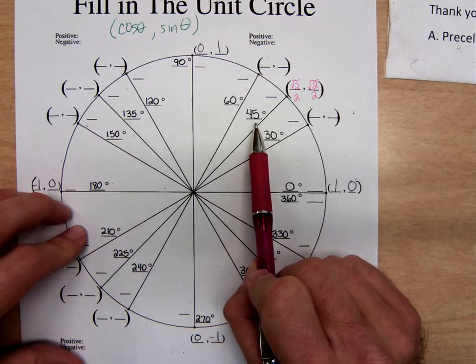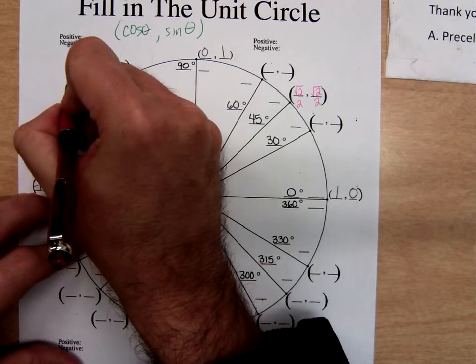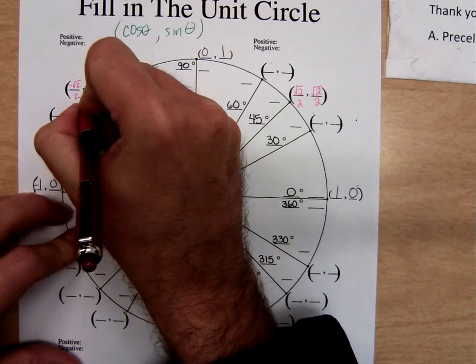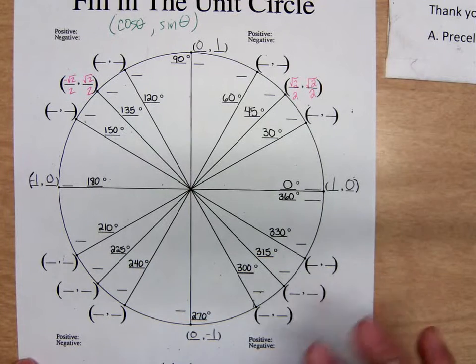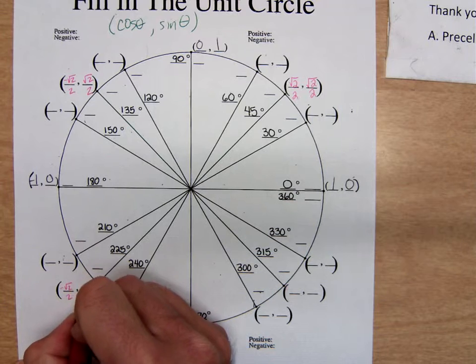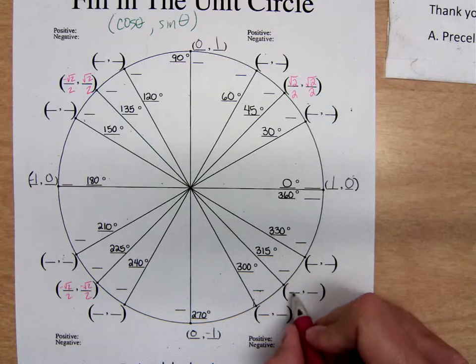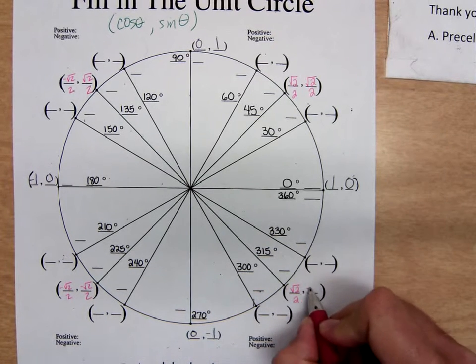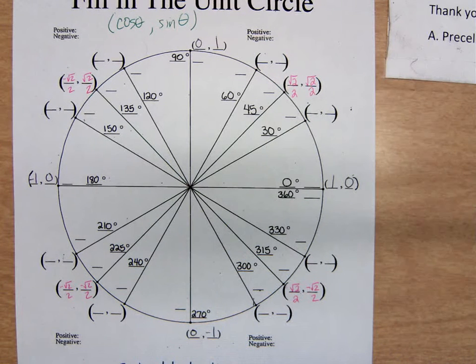The thing that's changing is the signs, S-I-G-N, as you go around. The X coordinate in quadrant two, the X is negative, the Y is positive. In quadrant three, at 225 degrees, they're both negative. And at 315 degrees, X's are positive, Y's are negative. Those are all the ones that have 45 degrees as the reference angle.